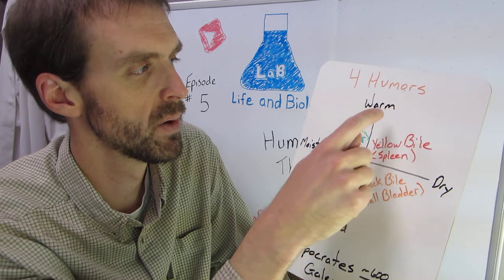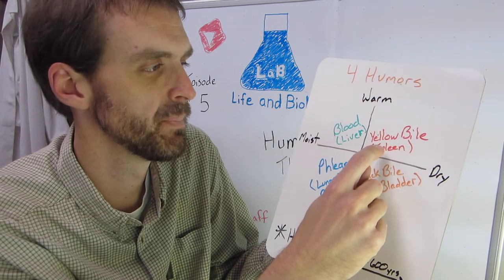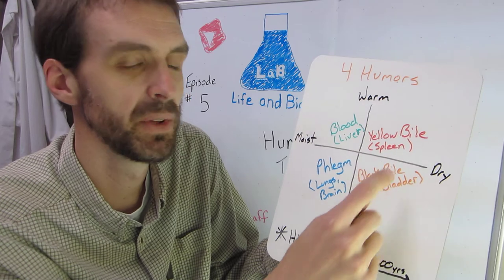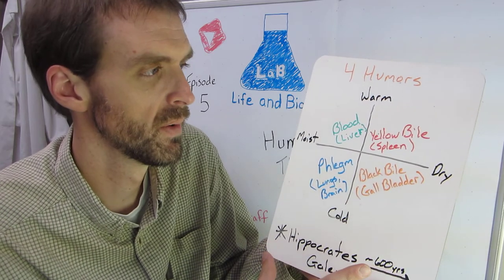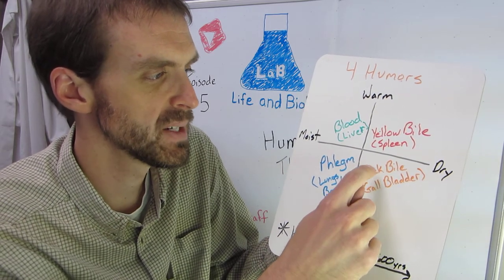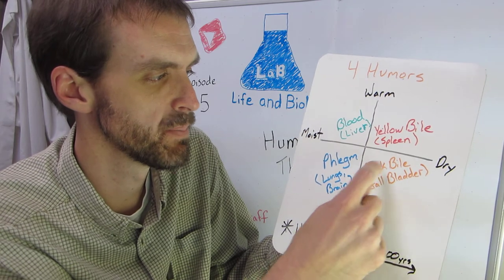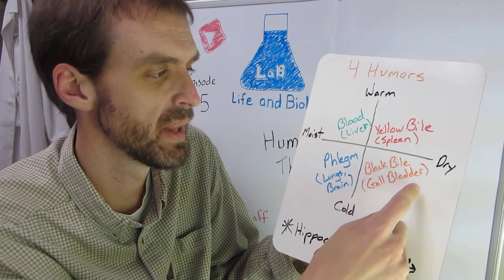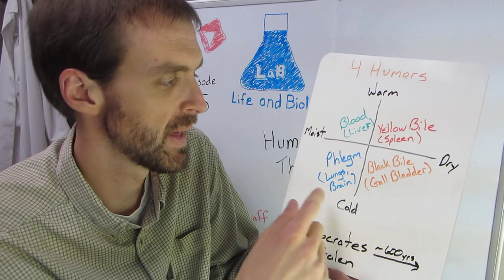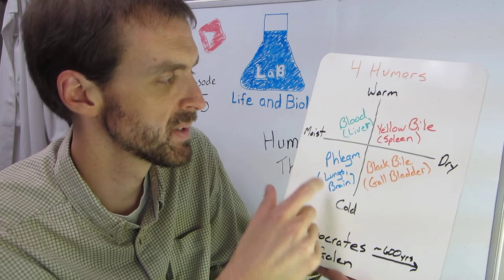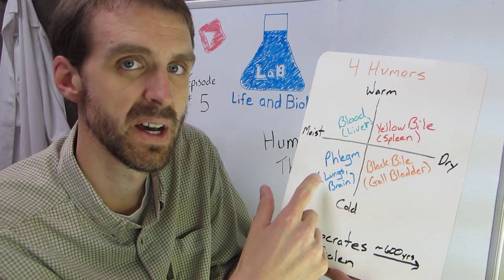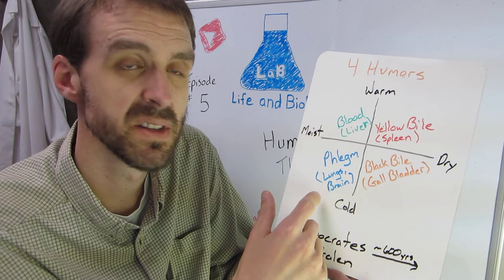And so for warm and dry, we have yellow bile, and there's an organ, the spleen was supposed to be important for yellow bile. And dry and cold is black bile, and the gallbladder was the important organ for that. And phlegm is cold and moist, and it was thought to be associated with the lungs and the brain.